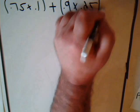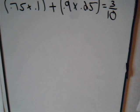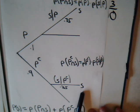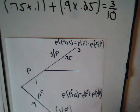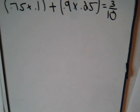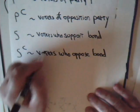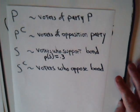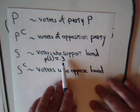The total probability of encountering a supporter of the referendum is 0.75 times 0.1, plus 0.9 times 0.25. Multiplying and adding these together gives 3 tenths. So if you randomly select a voter on the street, you have a 30% chance that person supports the bond referendum — coming from either a supporter in the opposition party or a supporter in the minority Party P. That takes care of part one: P(S) = 0.3.